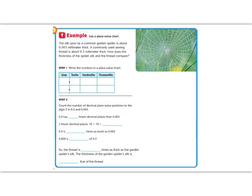Let's look at a decimal in a word problem. The silk spun by a common garden spider is about 0.003 millimeters thick, or three thousandths thick. A common used sewing thread is about 0.3, or three tenths millimeters thick. How does the thickness of the spider and the thickness of the thread compare? In order to compare them, we're going to use a place value chart.